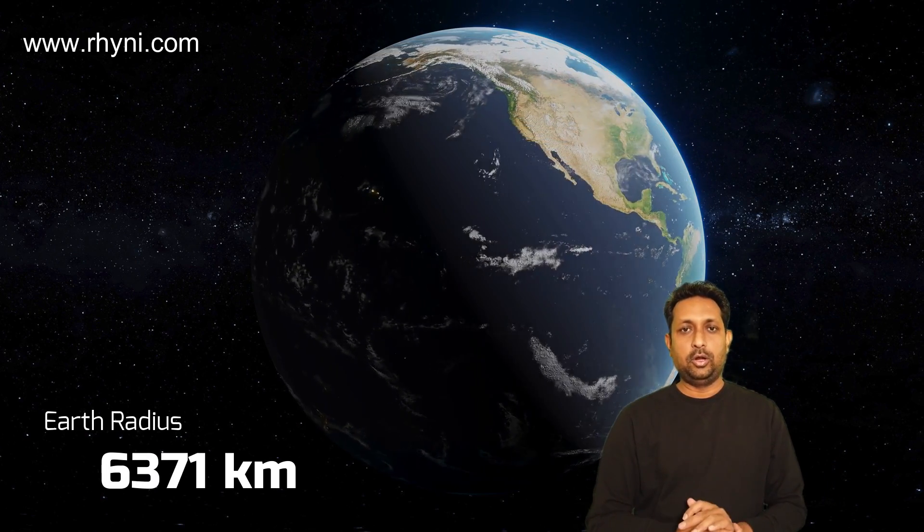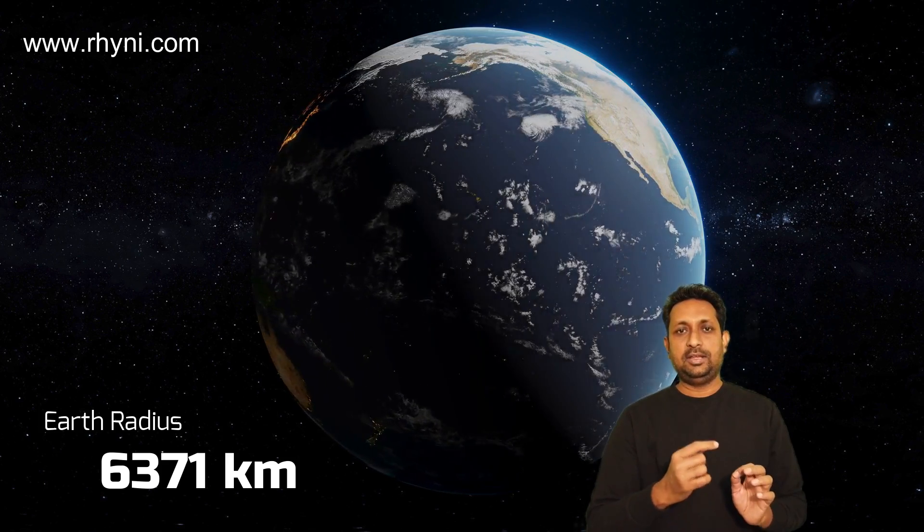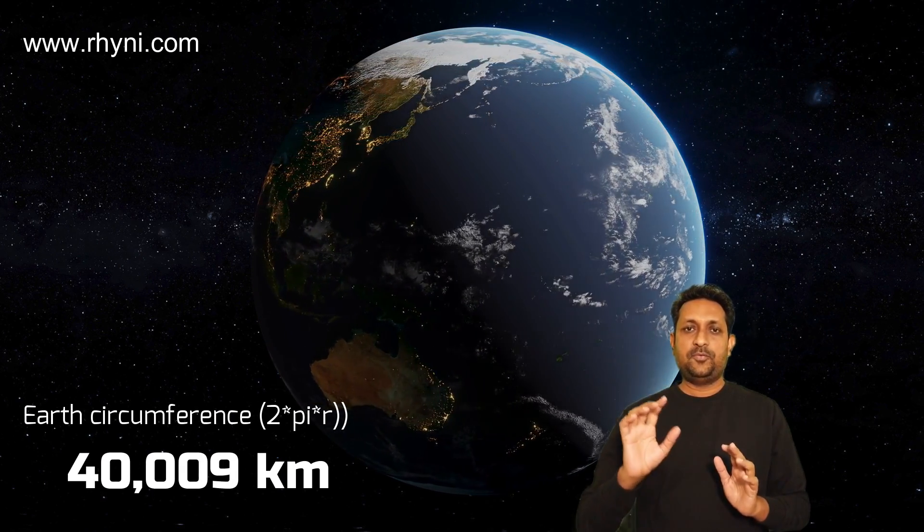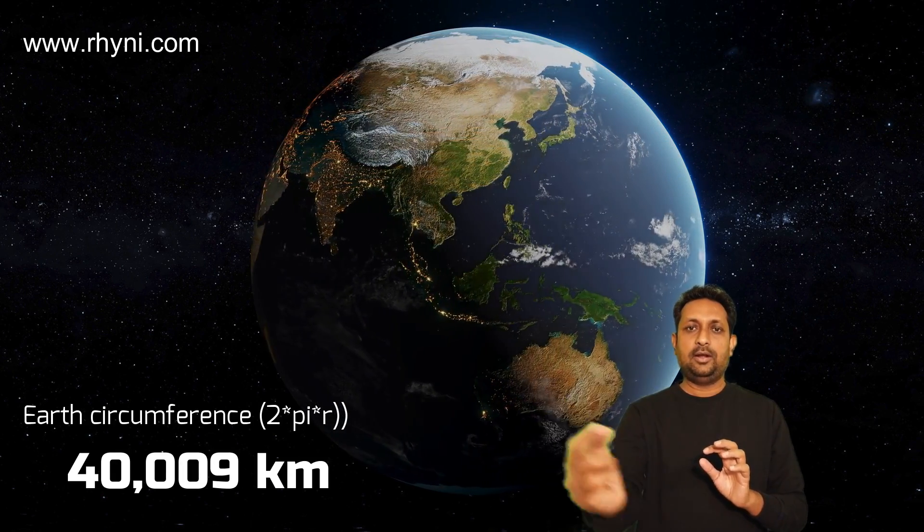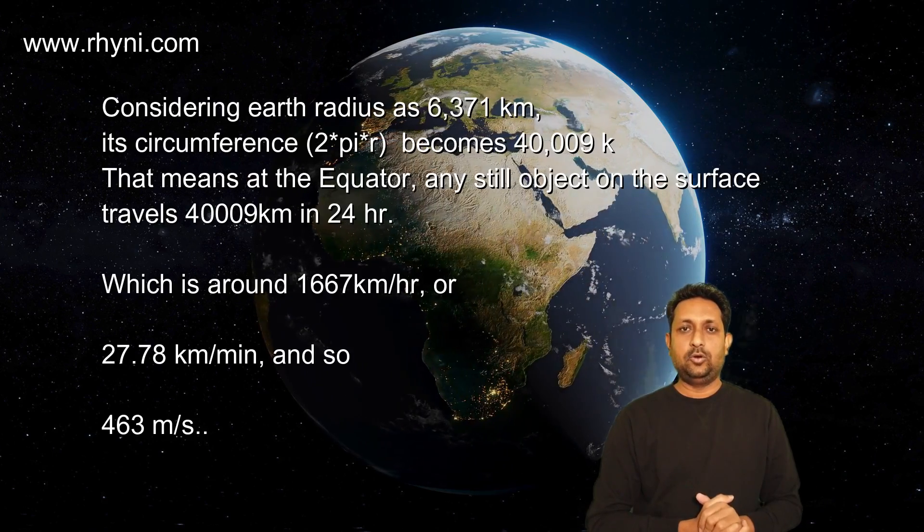Let's calculate the speed from the radius of Earth. The radius of Earth is 6,371 kilometers. Based on this radius, if we calculate the circumference and find at which speed any object on Earth is rotating, it becomes 463 meters per second. Here is how we calculated it.